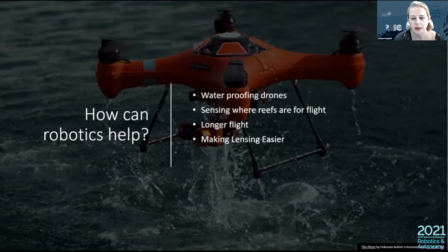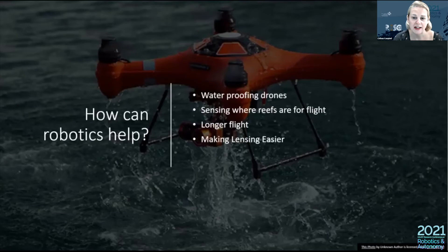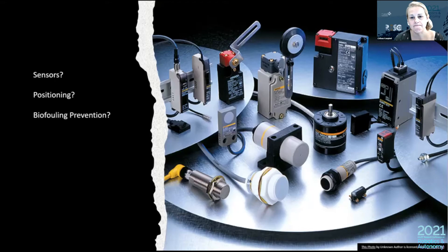I thought of some ways robotics may help. For example, waterproofing drones would make things a lot easier — right now if a drone falls we lose it and all its data. When we're out doing drone flights, we generally don't have Wi-Fi, so pulling up maps to create new flight paths isn't possible. Having a drone that can sense where the reef is and make a map on the fly would be amazing. Changing batteries often is an issue, and fluid lensing — as mentioned — is either battery-heavy, time-heavy, or computationally heavy, so making that process easier would be great.